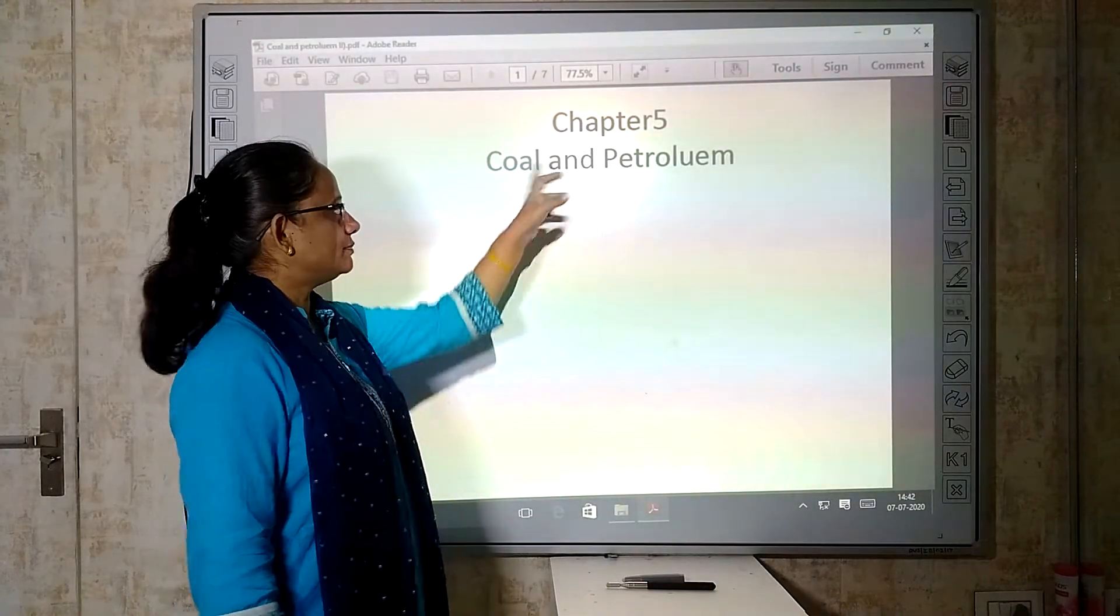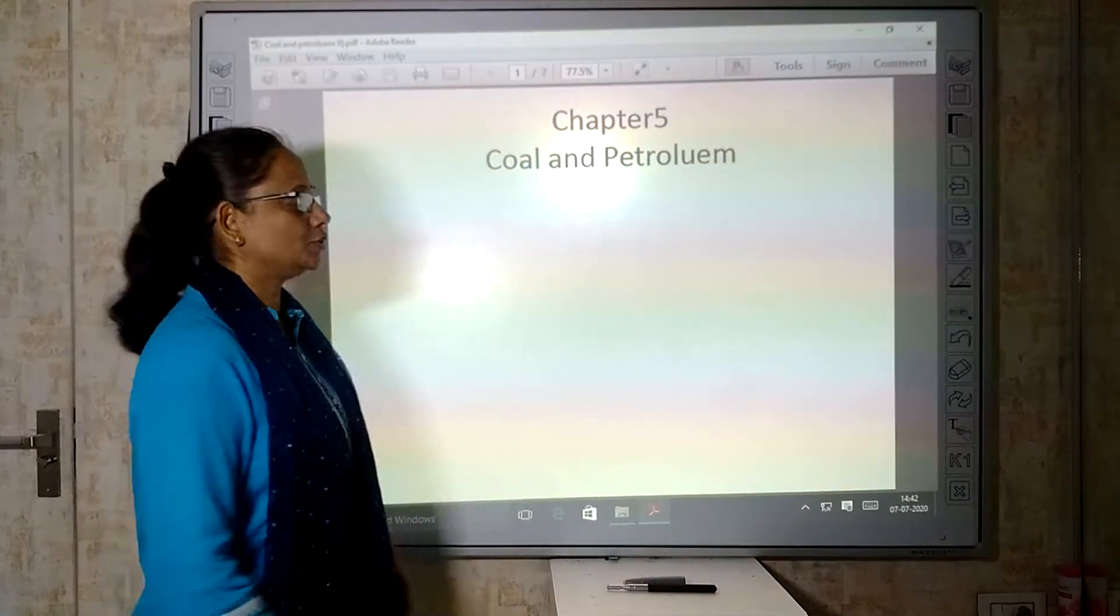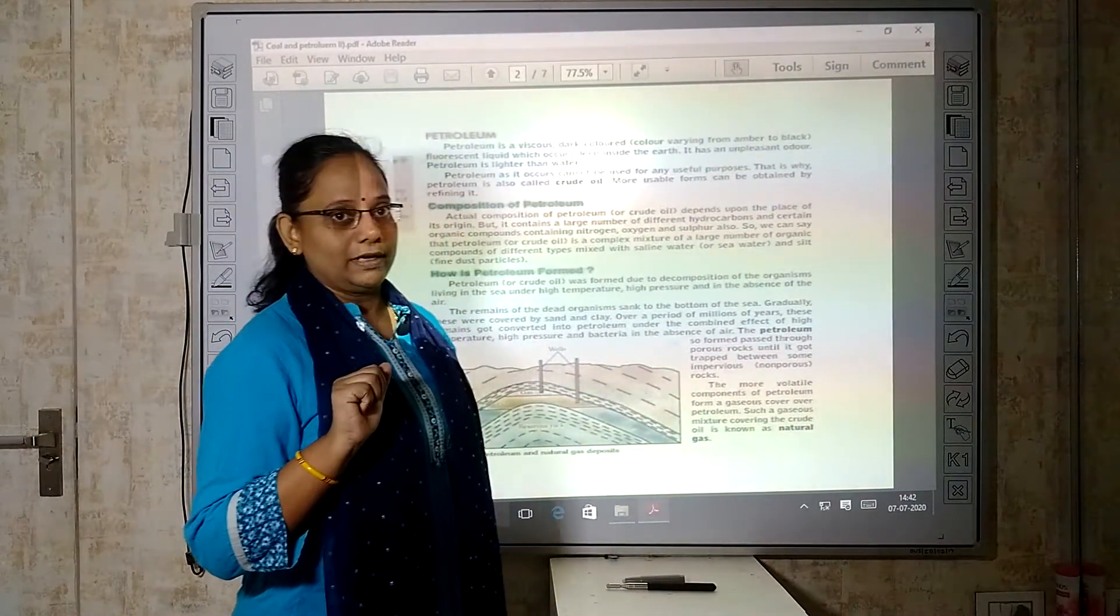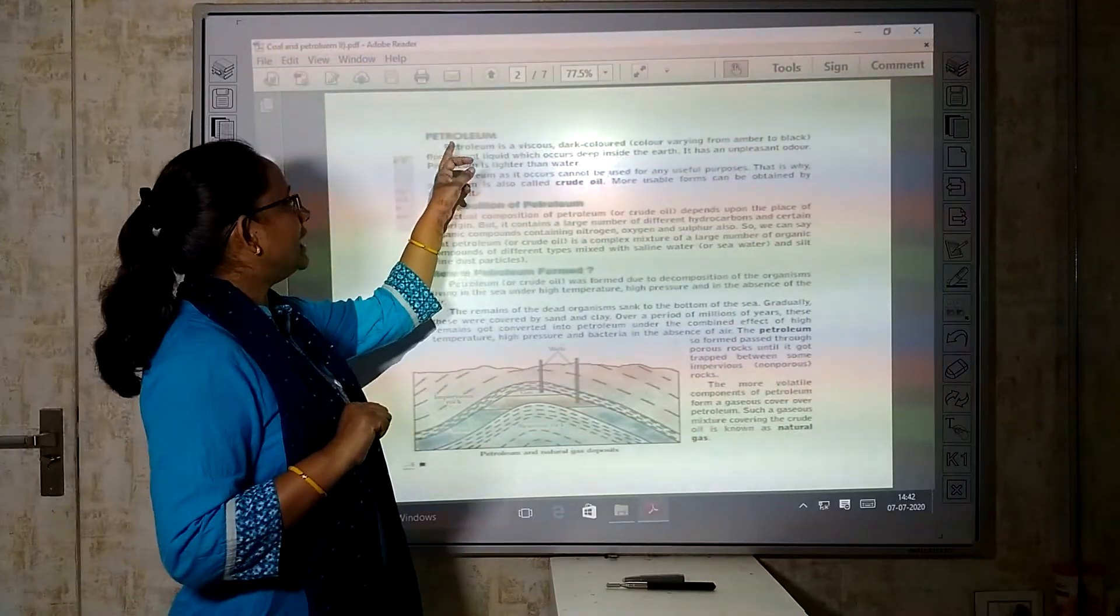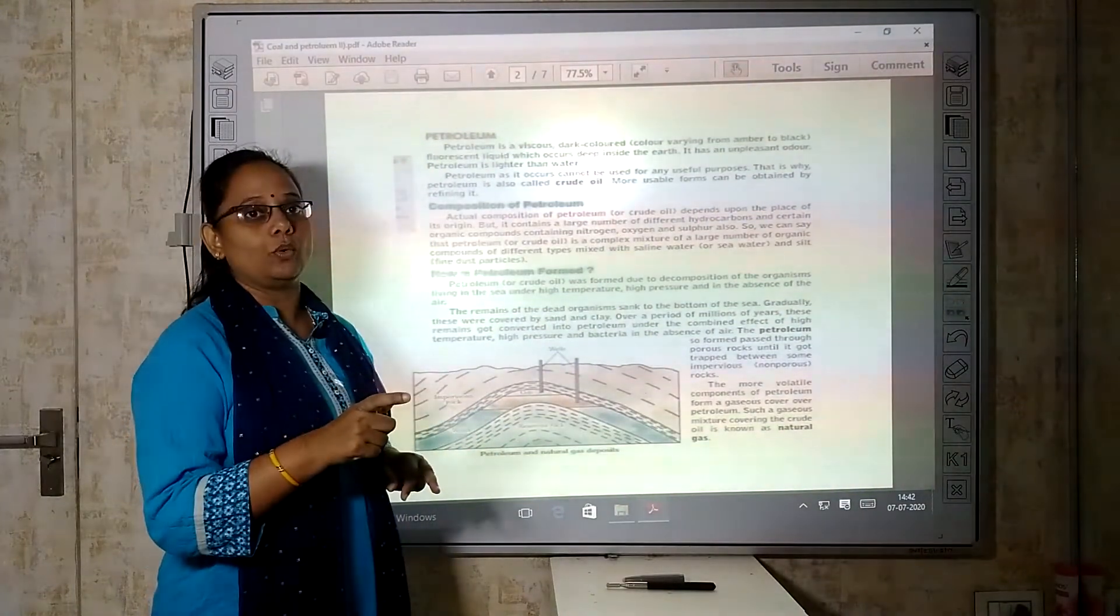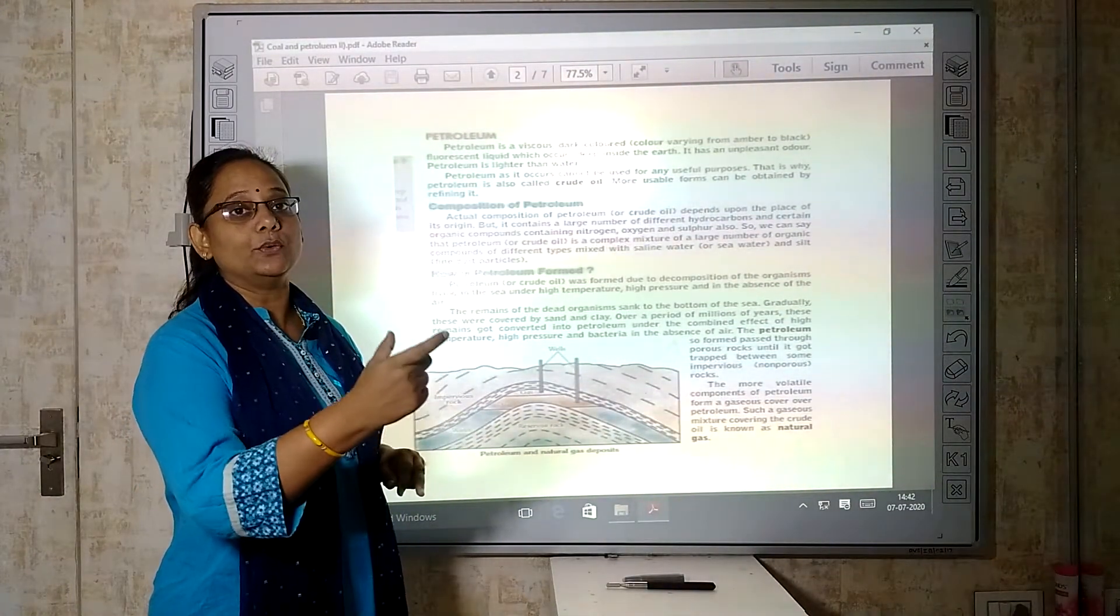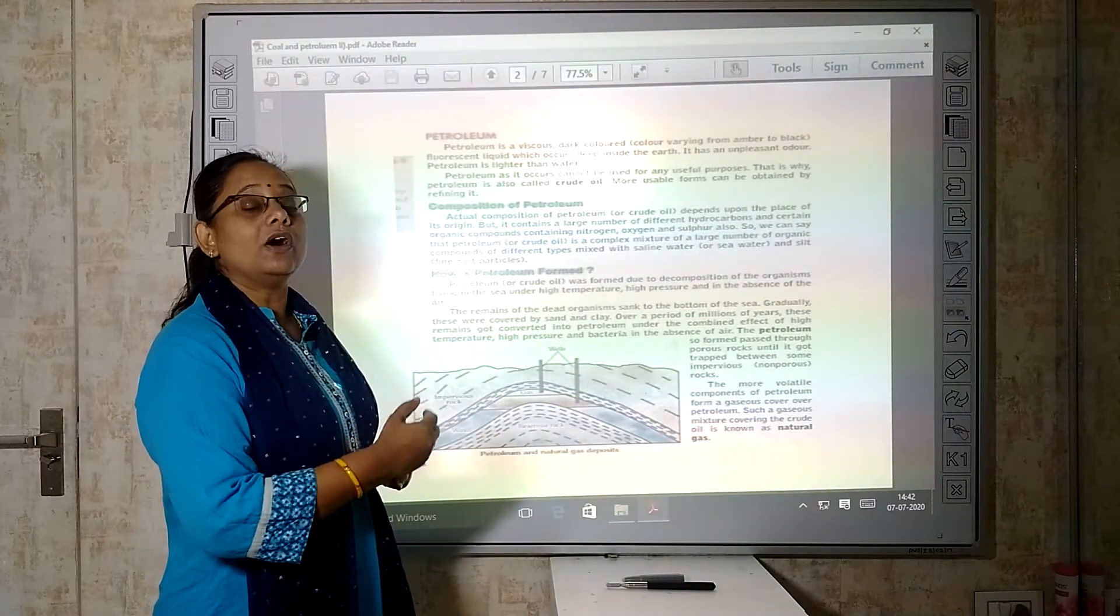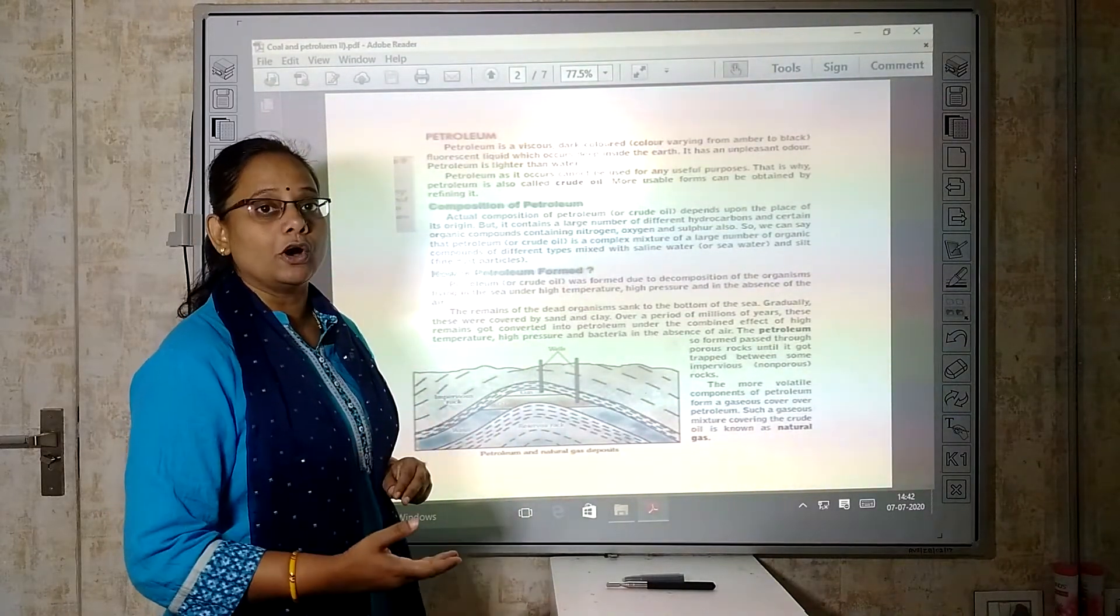We will start with chapter 5, coal and petroleum. Our topic today is petroleum. See, if we bifurcate the word: petro means rock and oleum means oil. That is the oil which is obtained from rocks.